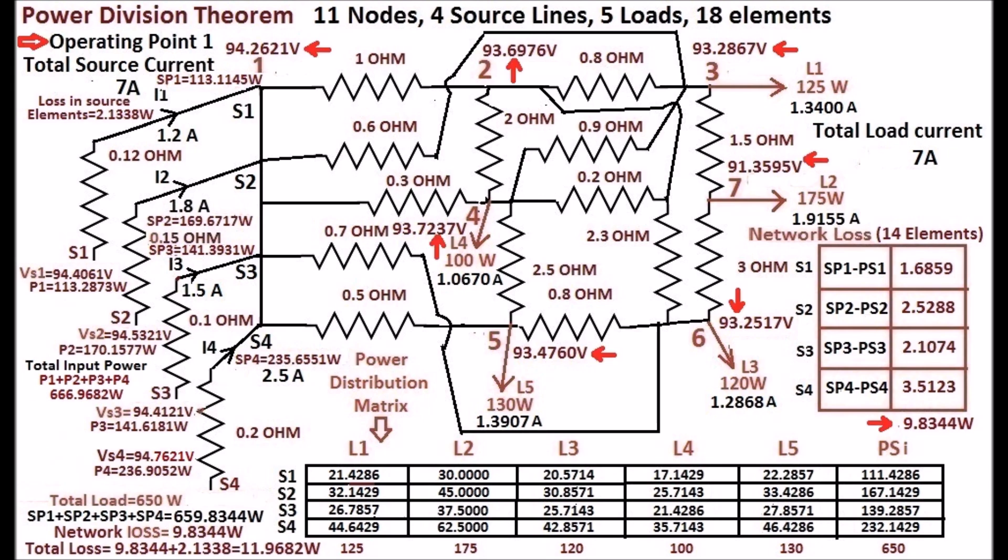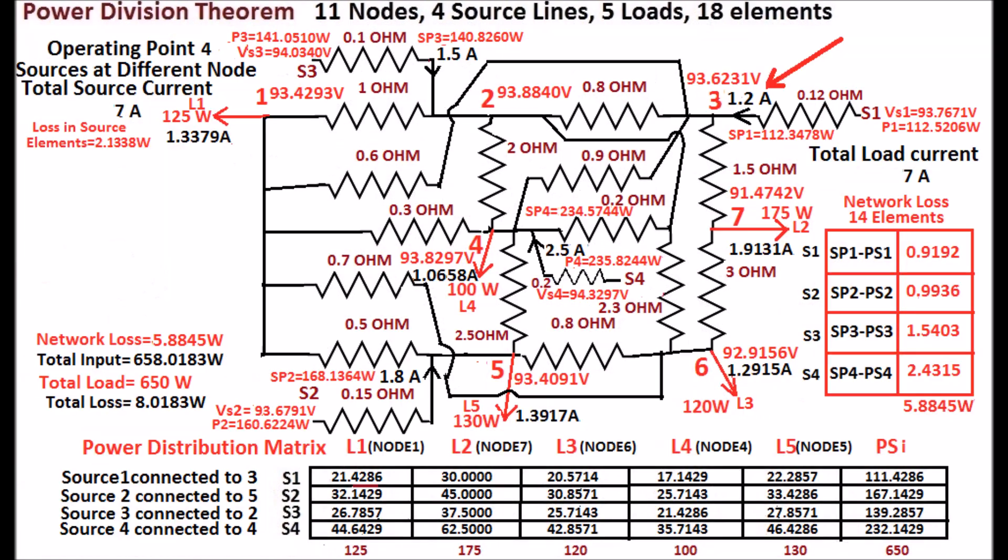Load voltages and currents are shown in the display. Without changing the source current 1 magnitude, it is connected to node 3. Similarly, source 2 connected to node 5, source 3 connected to node 2, and source 4 connected to node 4. The load is shifted to node 1 as shown in the display.